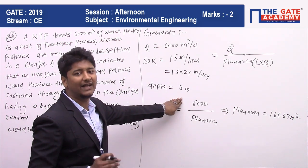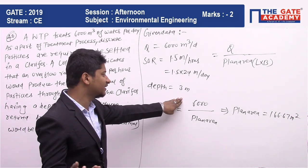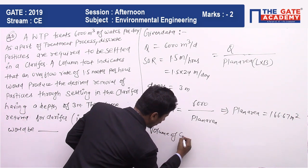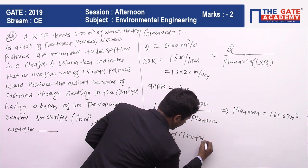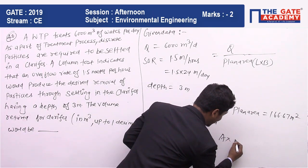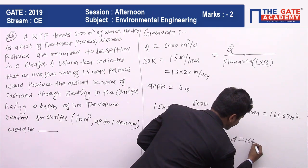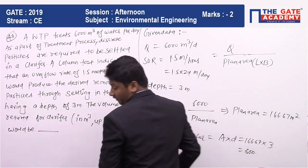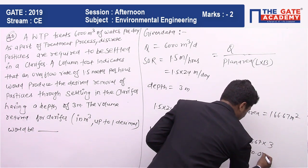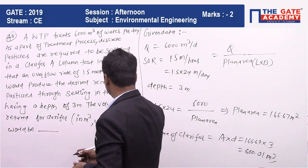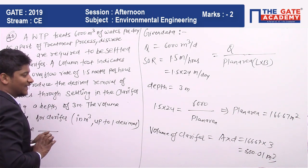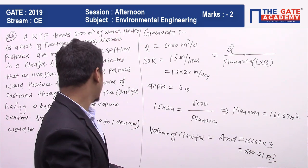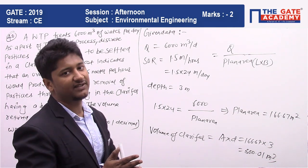The depth of the clarifier is 3 meters and they are asking the volume of the clarifier. Volume = area × depth = 166.67 × 3 = 500.01 meter cube. They are asking the answer up to one decimal place, so the answer is 500.0 meter cube.